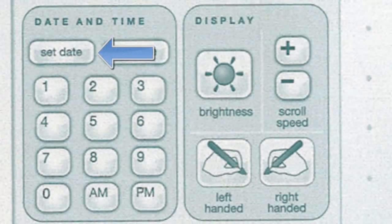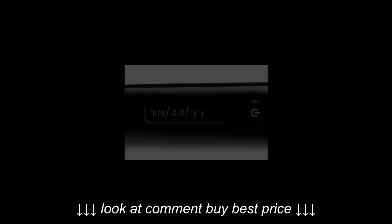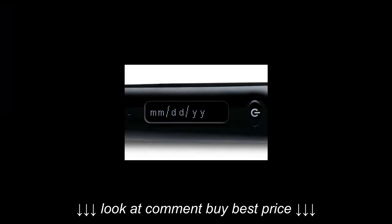To set the date on your SmartPen, tap the Set Date button with the ink tip of your SmartPen. Then tap the Number buttons to program the date. The OLED screen of your SmartPen will show your progress and display the date when programming is complete.